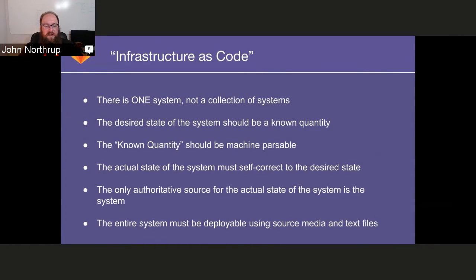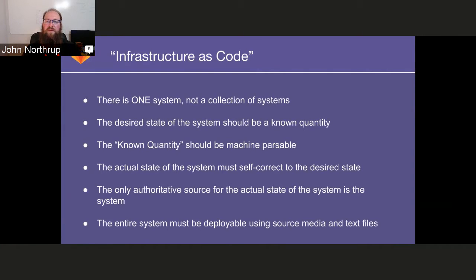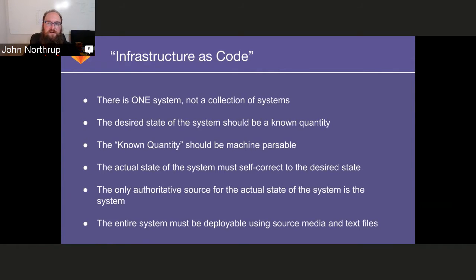The unwritten rule is that the entire system must be deployable using source media and text files. We do this with Chef using off-the-shelf products and deployables. GitLab.com — the enterprise service we run for the community as a SaaS — is actually deployed using the same GitLab enterprise omnibus builds we give our customers. We're totally doing the same thing they would do, using industry best practices to deploy and scale it. We really like to think of ourselves as dogfooding in that effect, doing the exact same things our customers would be doing when deploying our software.